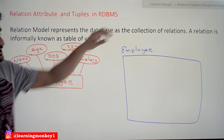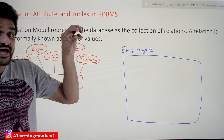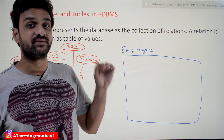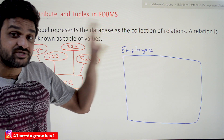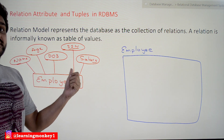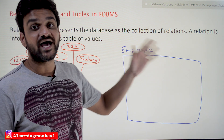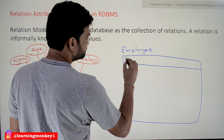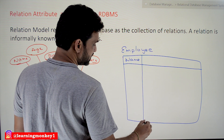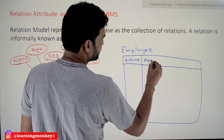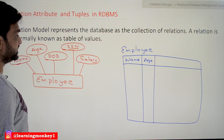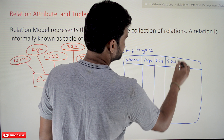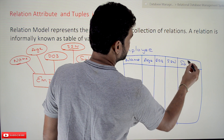The attributes — the properties of the entity type — are represented as columns in the table. So the attributes here are: name is one column, the next one is another column, date of birth (DOB) is another property and column, SSN is another property and column, and salary is another column.